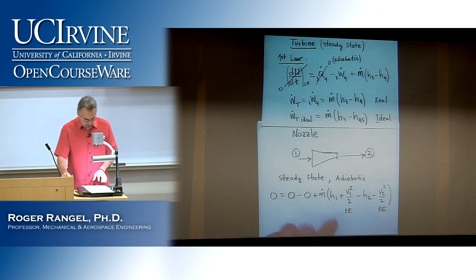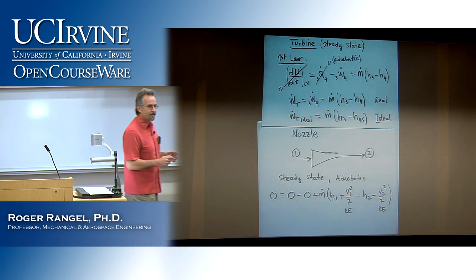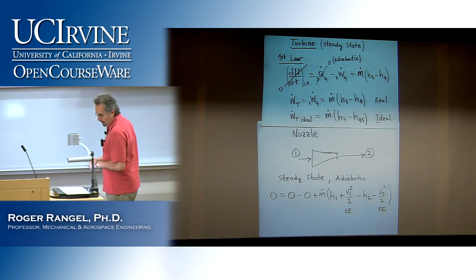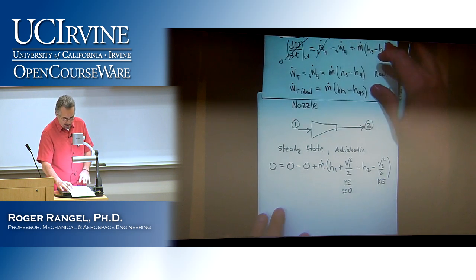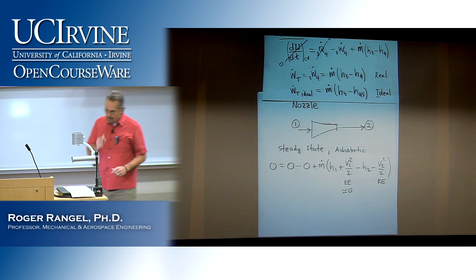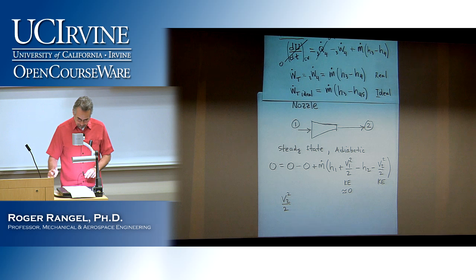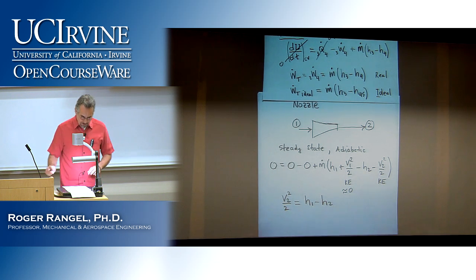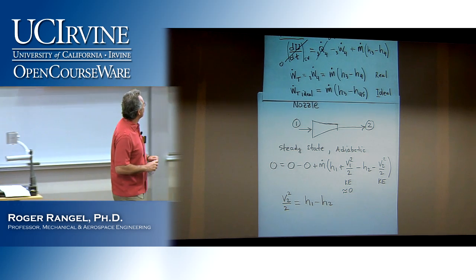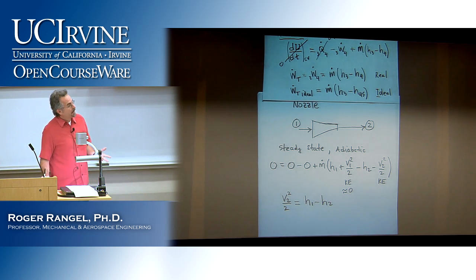Since the purpose of the nozzle is to bring the fluid from low to high kinetic energy, the inlet kinetic energy V1²/2 can typically be neglected compared to the outlet. So we can write that the exit kinetic energy per unit mass, V2²/2, equals H1 minus H2. We can find the exit kinetic energy from the difference in enthalpies.